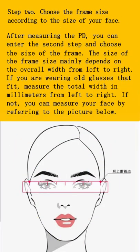Step 2: Choose the frame size according to the size of your face. After measuring the PD, you can enter the second step and choose the size of the frame. The frame size mainly depends on the overall width from left to right. If you are wearing old glasses that fit, measure the total width in millimeters from left to right. If not, you can measure your face by referring to the picture below.